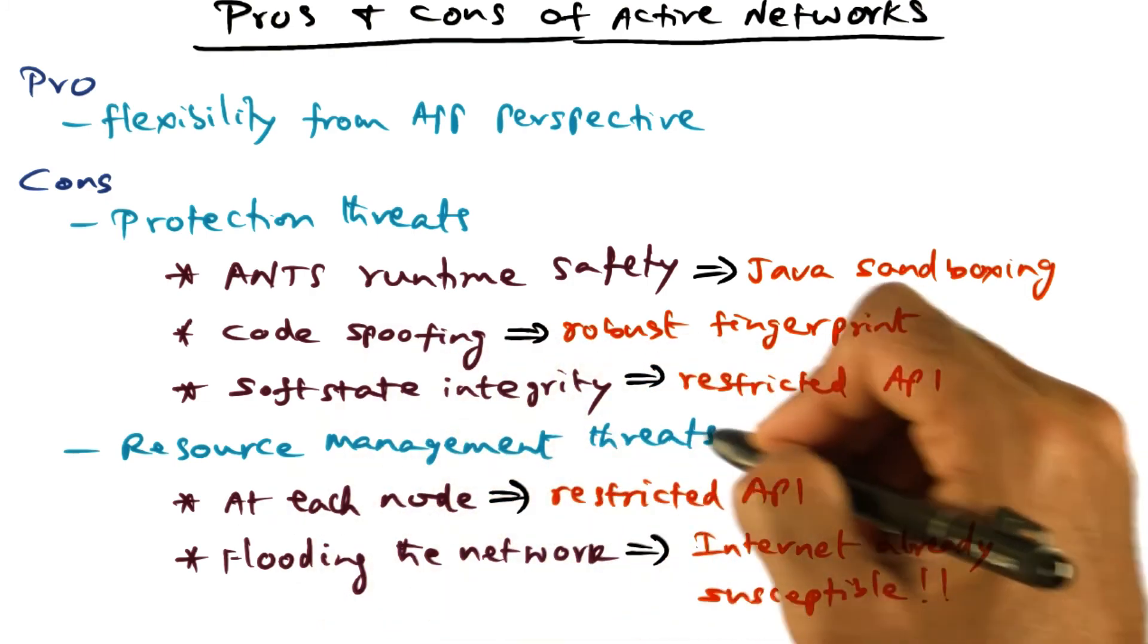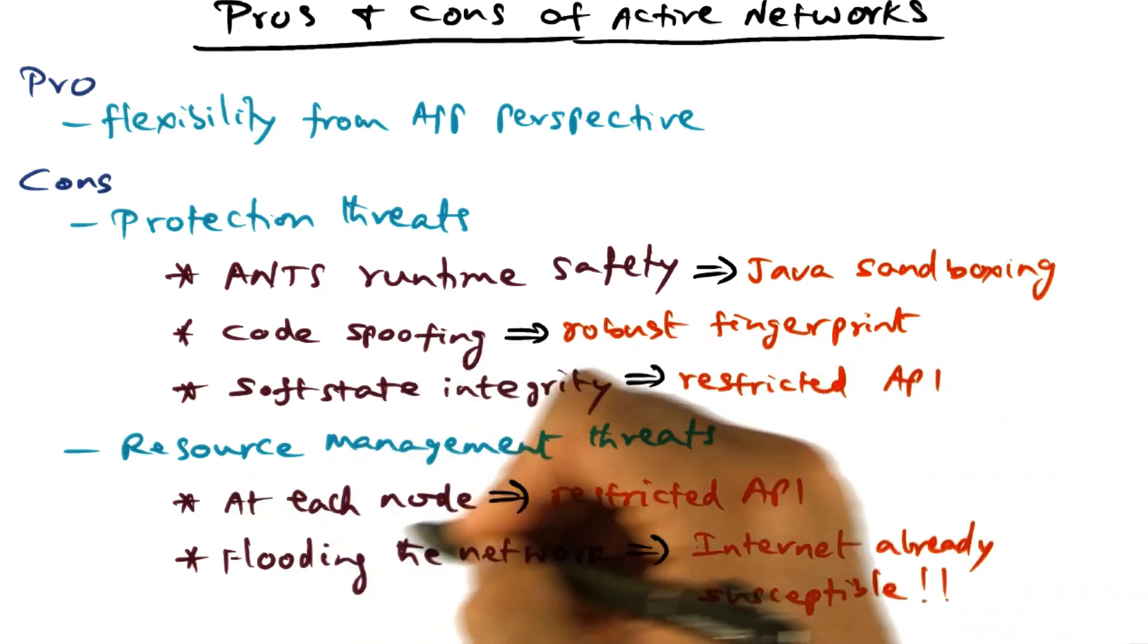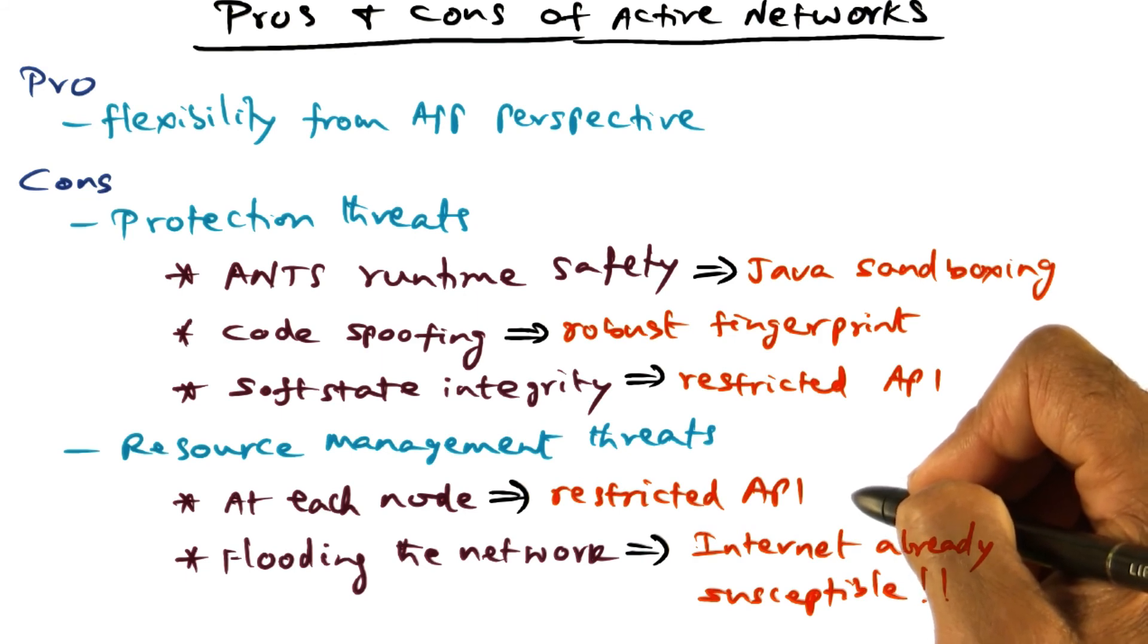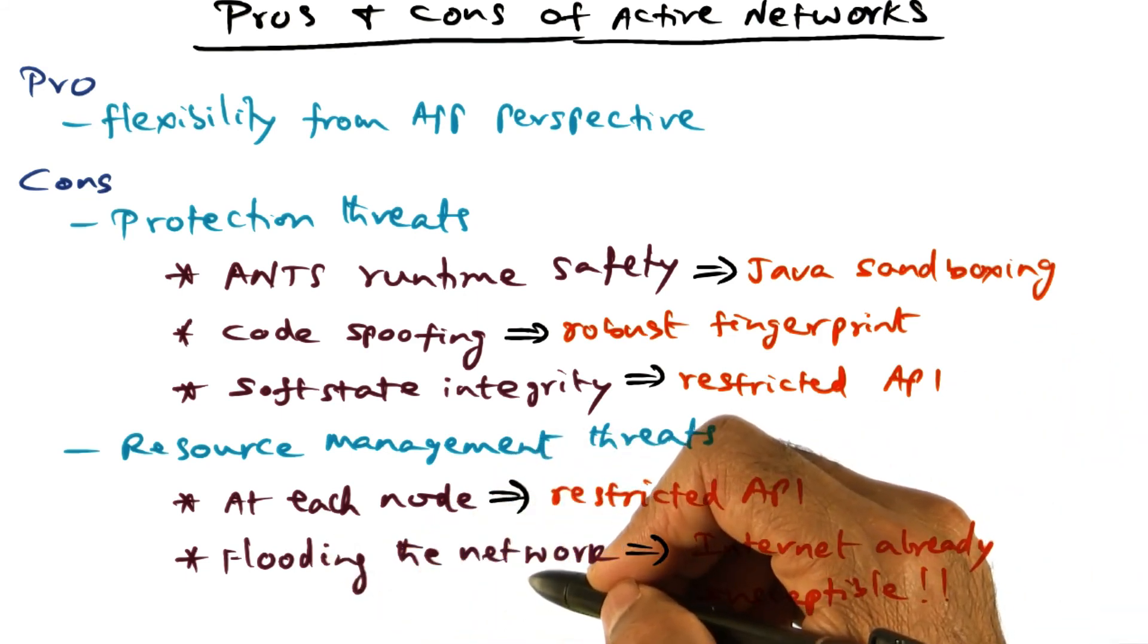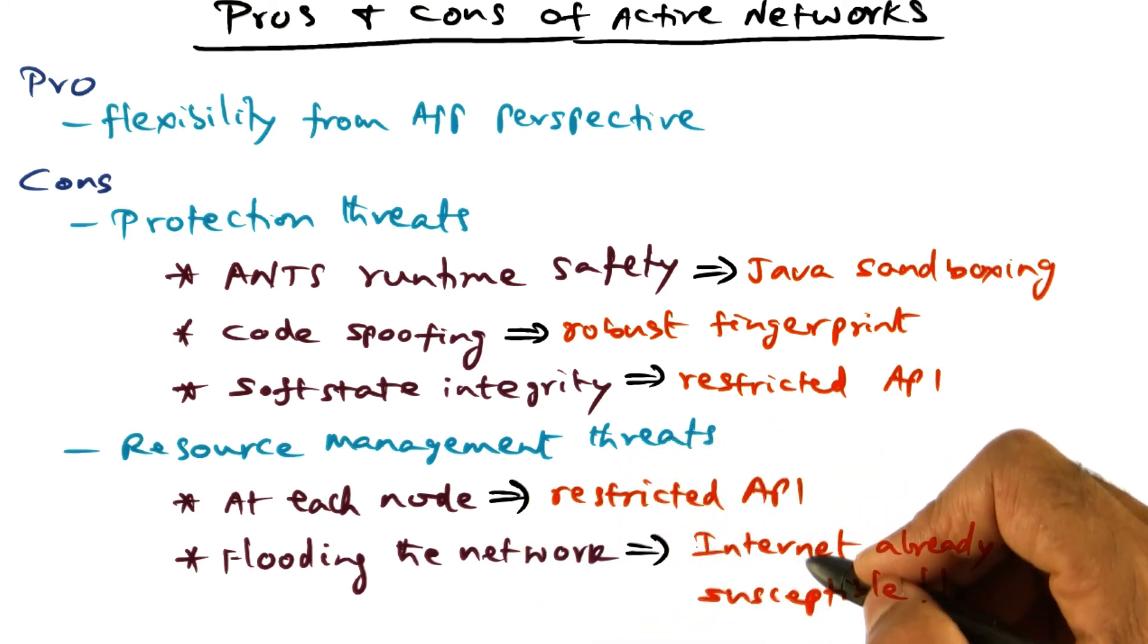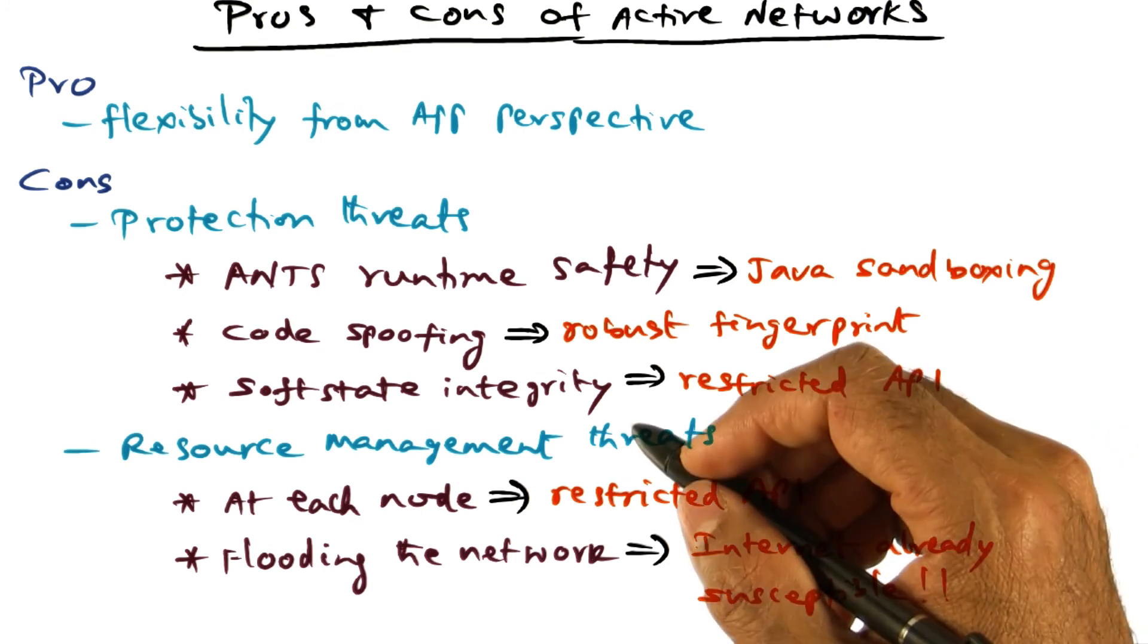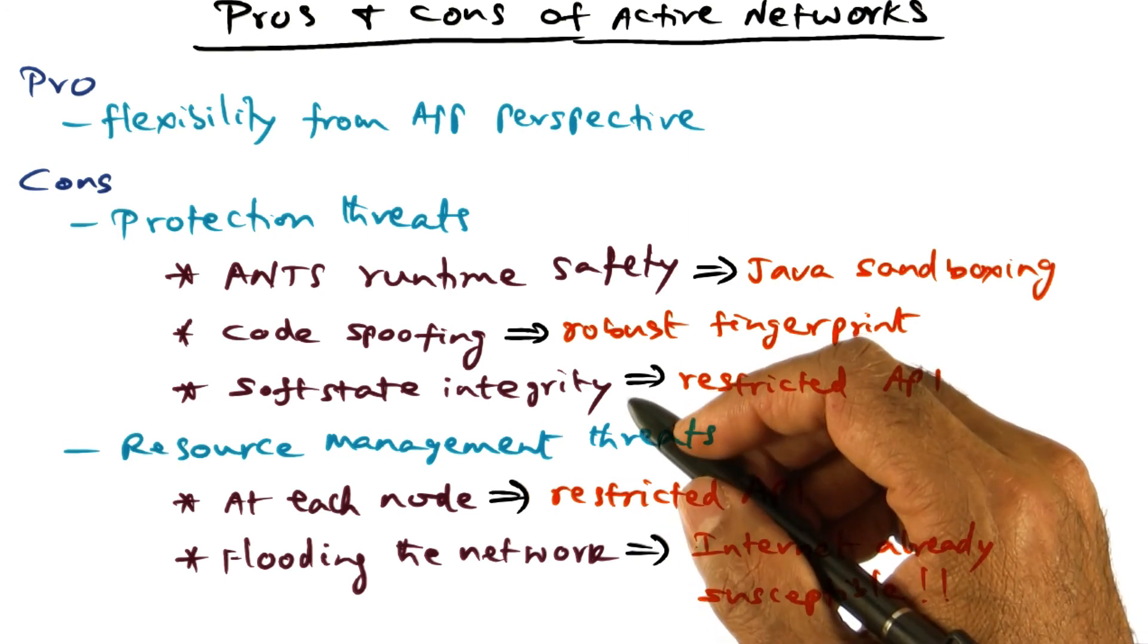So there is sort of a mixed answer to this resource management concern. At a given node, the resource management concern doesn't quite exist so long as you adhere to this restricted API of ANTS. And the second concern that the capsules may flood the network can happen, but it already happens. We all experience spam on the internet. So this is not adding any new problem, but it is perhaps exacerbating an existing problem. So having looked at the vision and the practicality of active networks, time for a quiz.